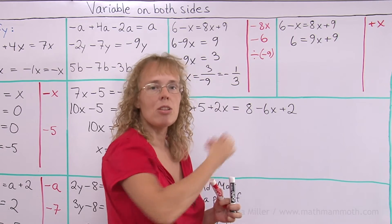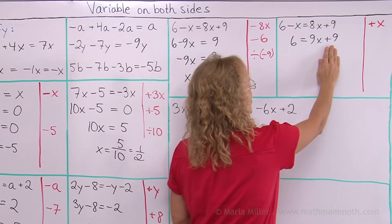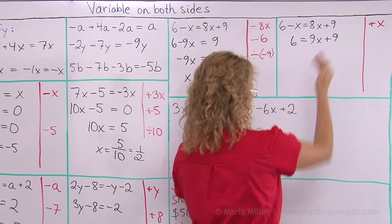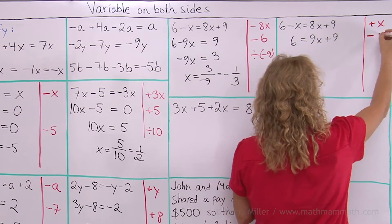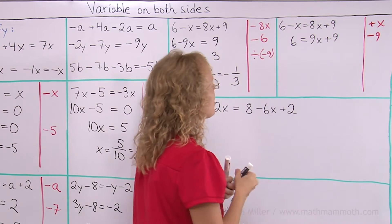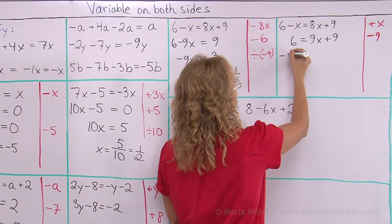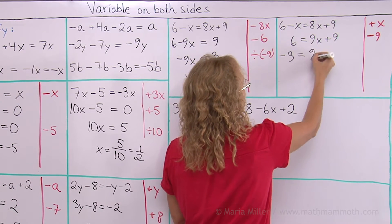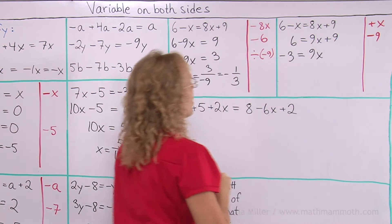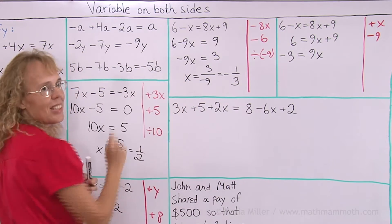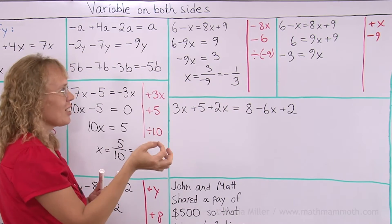And now, since my x term is on the right side, I want to get rid of this plus 9 from this side. So I subtract 9 from both sides. So 6 minus 9 would be negative 3, and then I have 9x over here, compared to what we had here. Almost the same, just the negative is on the other side.